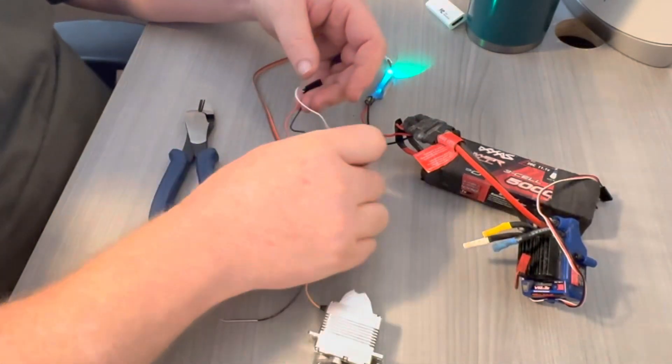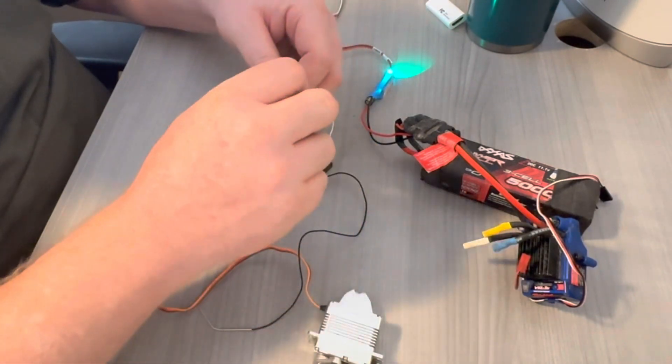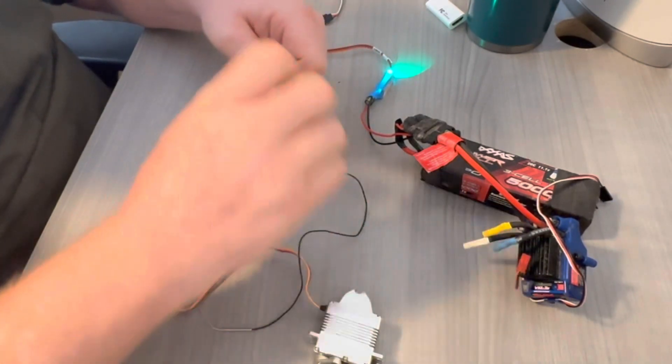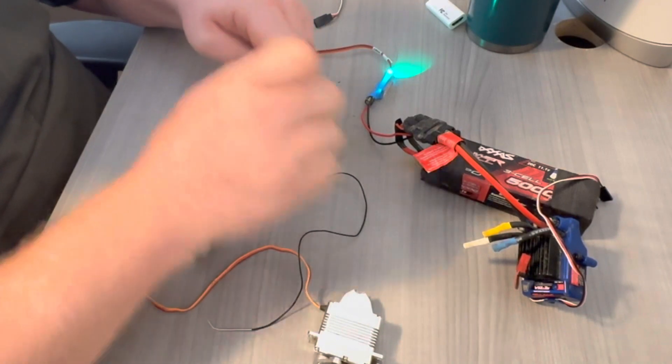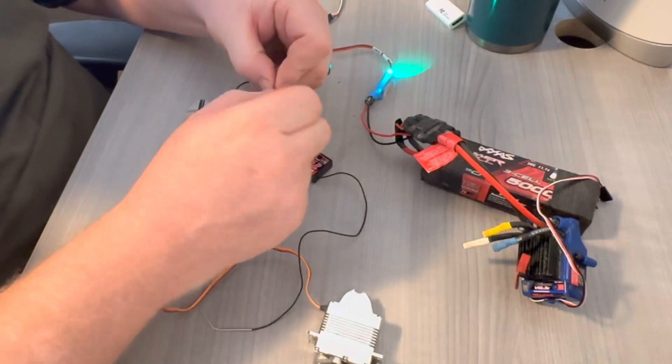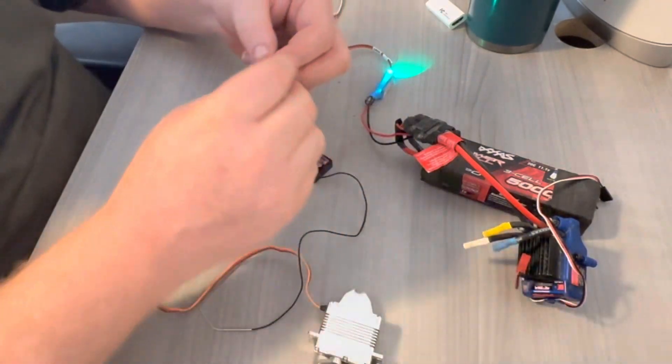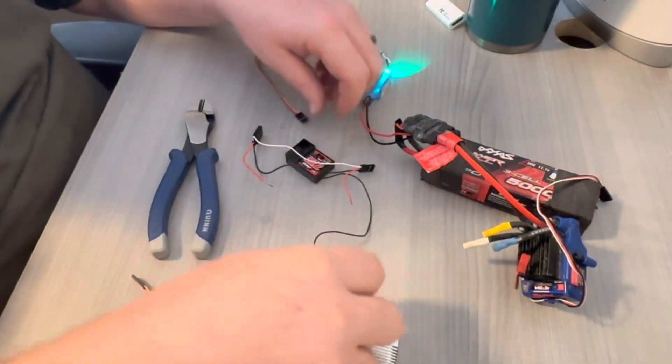Okay, so one end of it's not going to do anything anymore. The end that's coming out of the servo, you're going to want to splice that. Like I said, you're going to want to make good connections, build your own plug or whatever you decide to do.